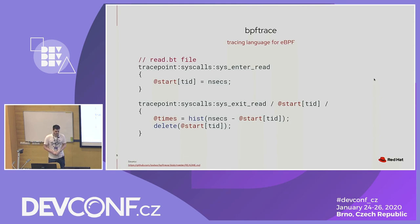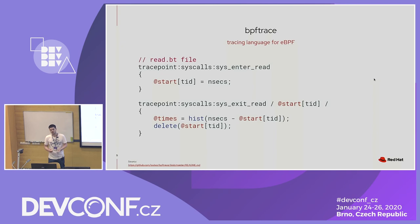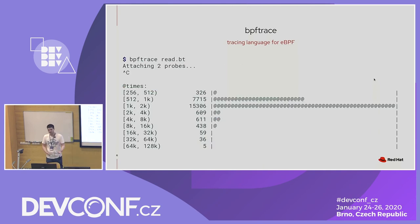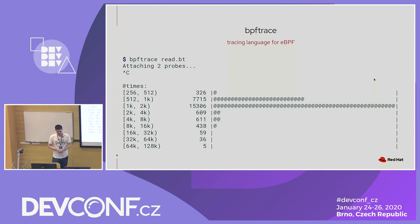BPFtrace is a tracing language for eBPF. In this example, we attach two trace points for the read syscall, and then we calculate: when the read syscall starts, we save the current timestamp in a map, and when the read syscall ends, we calculate the difference — so we know how much time is spent in the read syscall. Usually when you run a BPFtrace script, you start it, wait for a bit so the data gets sampled, then stop it and get a histogram of all the data gathered during the runtime. The data gets grouped in BPFtrace in the kernel, so it's quite fast.